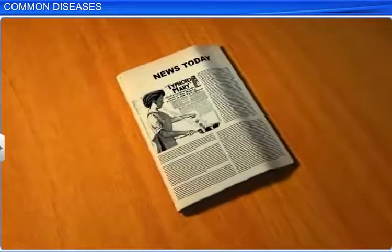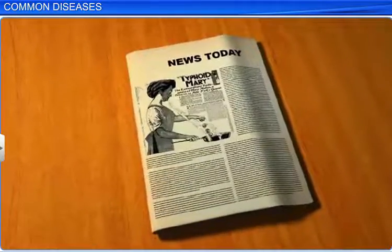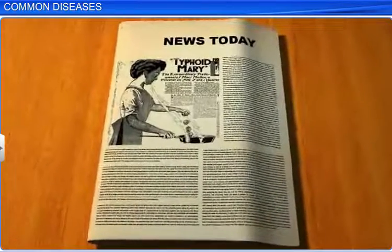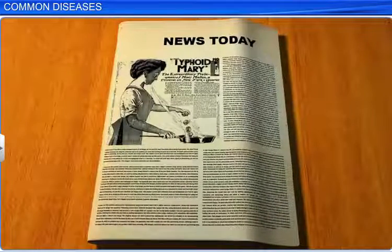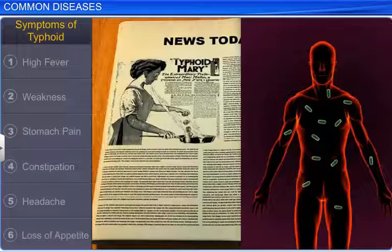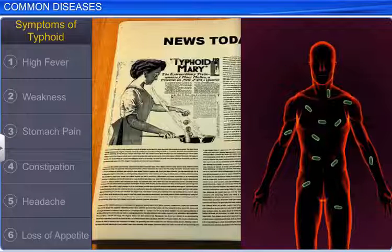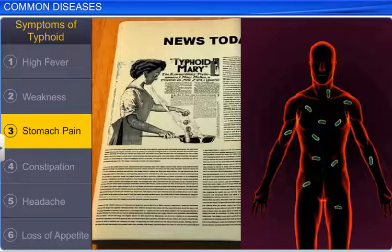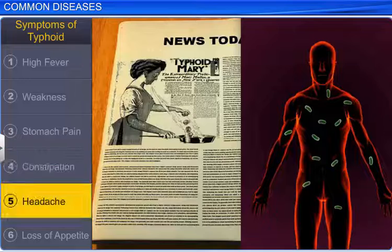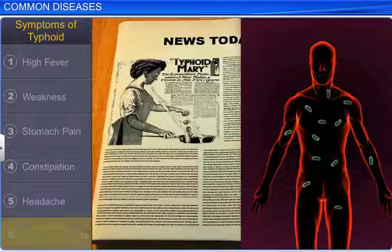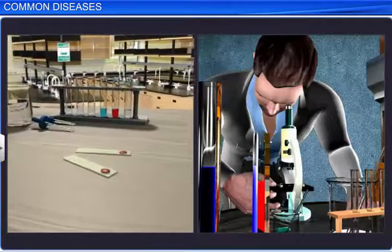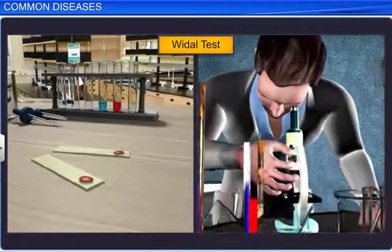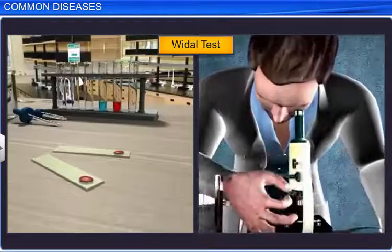Did you know that Typhoid Mary is a classic case in medicine, where a professional cook called Mary Mallon caused several typhoid outbreaks through the food she prepared? This happened because Mary Mallon was a healthy typhoid carrier herself. She did not display any common symptoms of typhoid like high fever, weakness, stomach pain, constipation, headache, and loss of appetite. Typhoid fever can be confirmed by a Widal test. In extreme cases, typhoid can cause intestinal perforation and death.